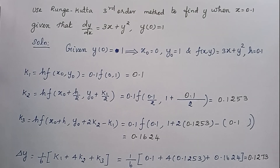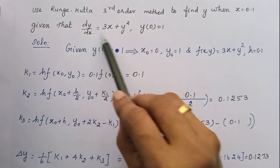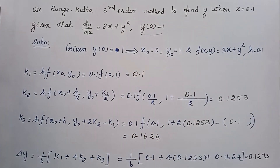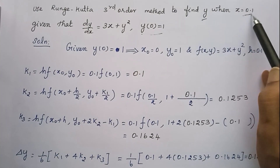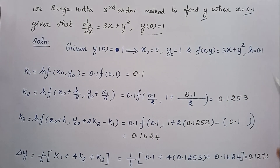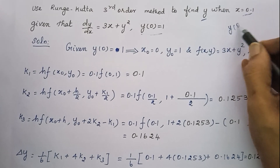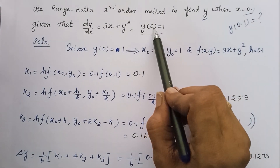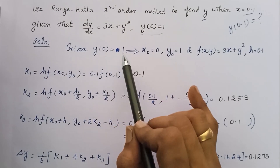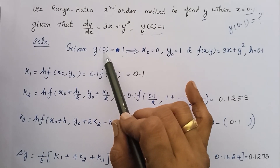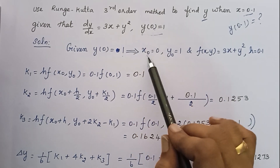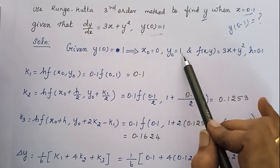Hi students. We can solve a problem with a differential equation and an initial condition. The question asks for the value of y(0.1). The initial condition is y(0) = 1. So we have x0 = 0 and y0 = 1.